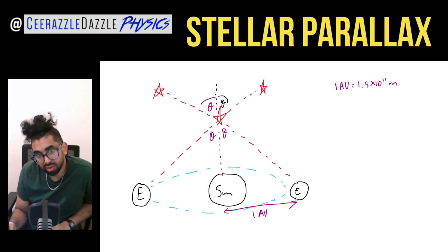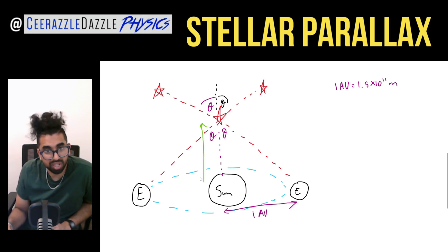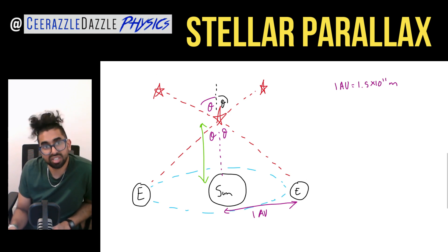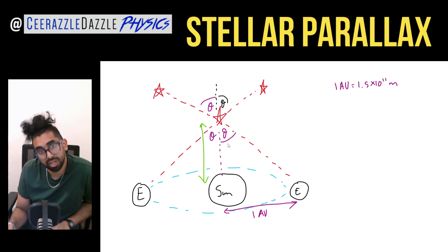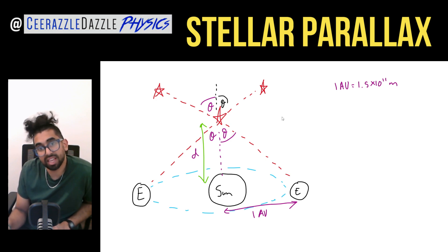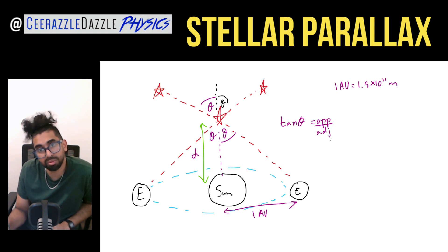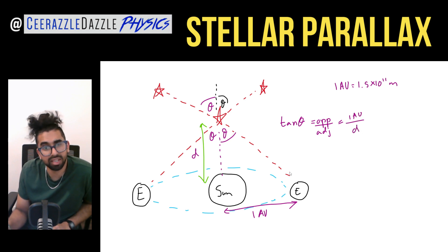Now we're going to talk about this triangle — we're going to look at the distance between the star and the sun. Hopefully you can see that triangle. We know this is going to be theta over here. Let's call this bit D — this is the distance between the star and the sun. We can say that tan of the angle theta is equal to opposite over adjacent. So therefore it's equal to one AU divided by D.